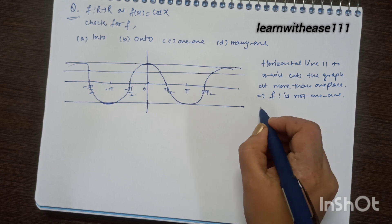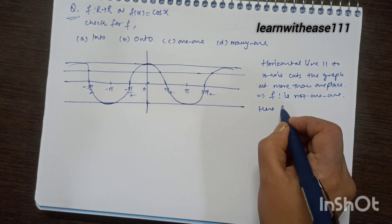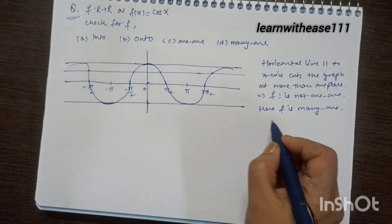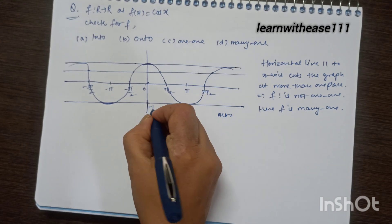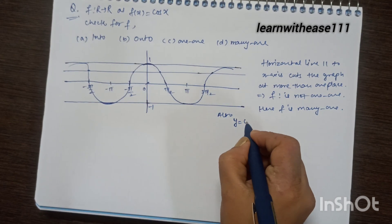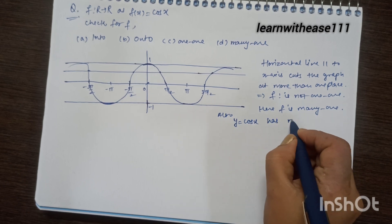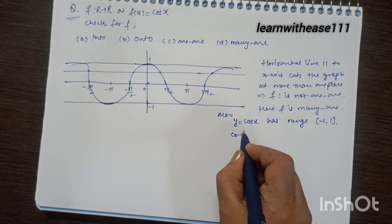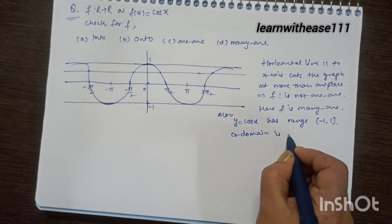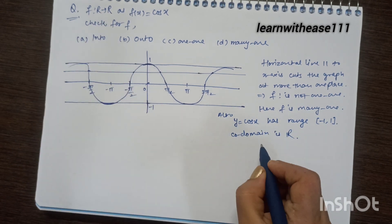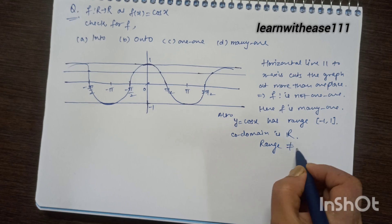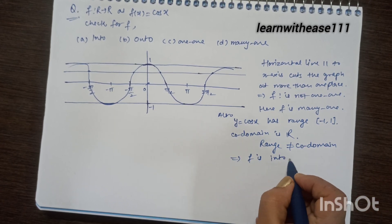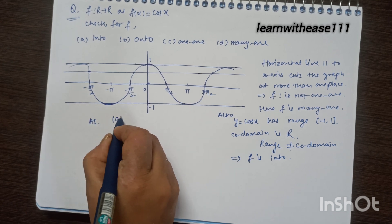The range of cos x is only between −1 and 1, while the codomain is given as the whole real numbers. Since the range does not match the codomain, the function is into. If we restrict the domain to a specific period, it may become one-one; otherwise with domain as all real numbers, it is many-one. The answer is: into and many-one.